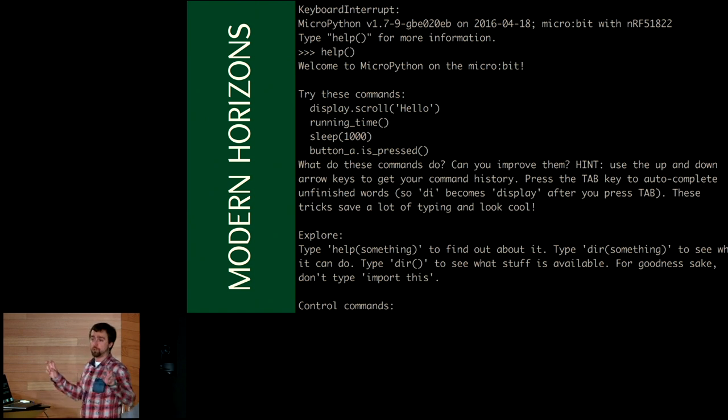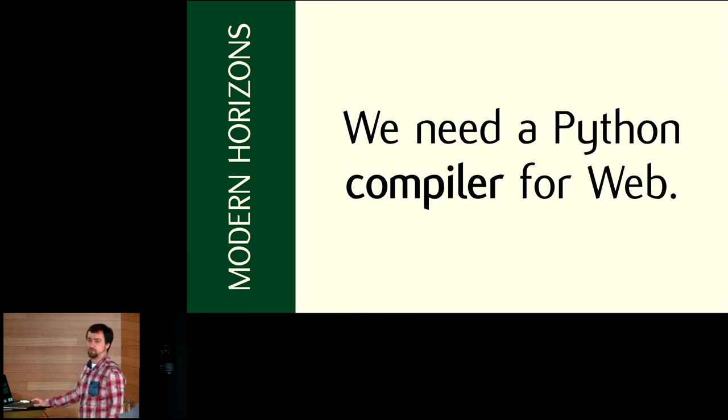When you connect your device over USB, you can hit Ctrl-C and then get a familiar REPL. That's impressive. You can, for example, run dir on the board module to get available pins on your circuit board. But will you need Ctrl-C on your client-side web application running on your phone? I guess not. Instead, we need a compiler for web.